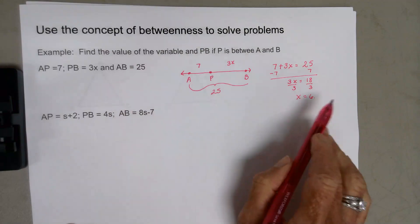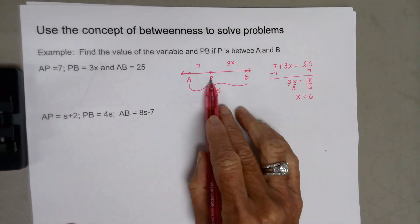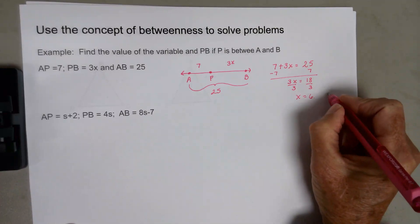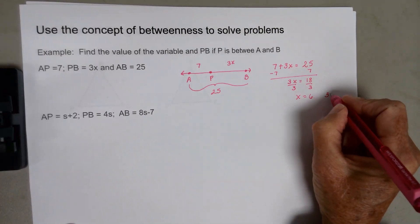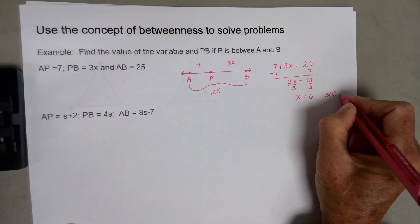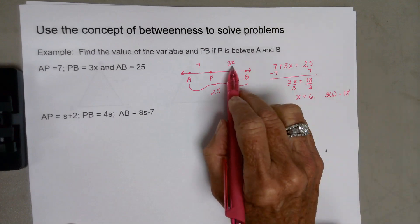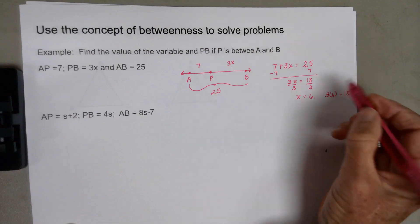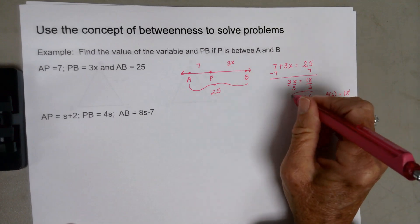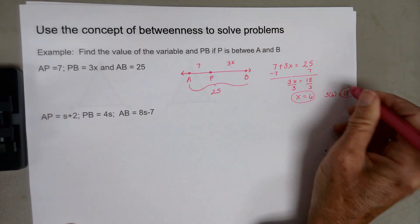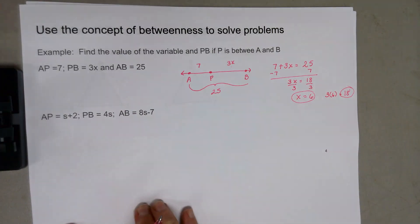But then you've got to plug back in to find PB. So 3 times 6 gives 18, because that's the equation for PB. So those are the two things we're looking for.